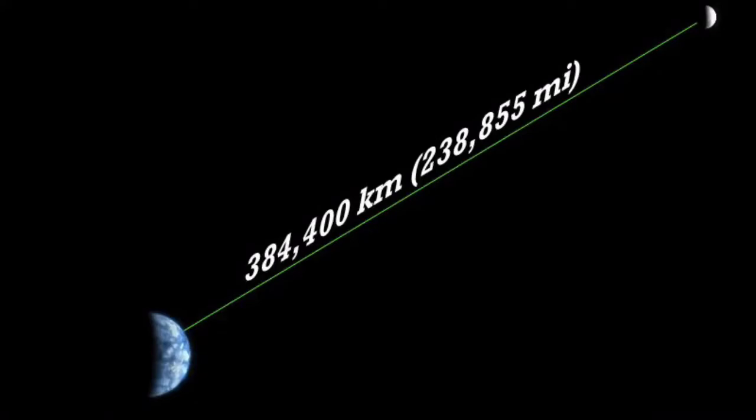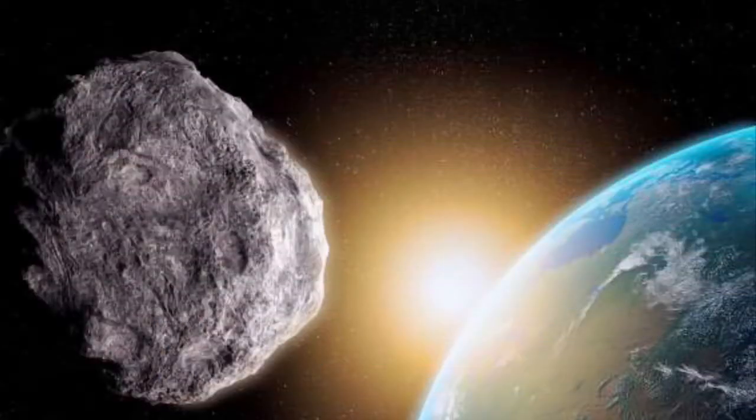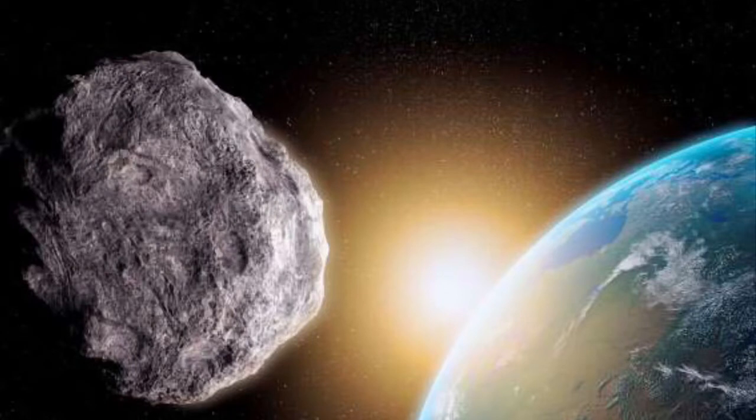As you can see here, the Moon is 238,000 miles away. This asteroid came 45,000 miles away. It is 187 to 427 feet wide and it was moving at 54,000 miles an hour. It was faint for a long time.